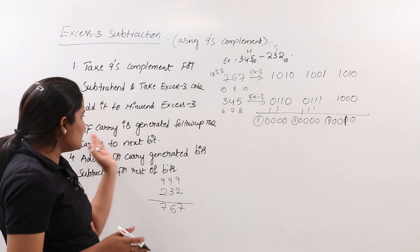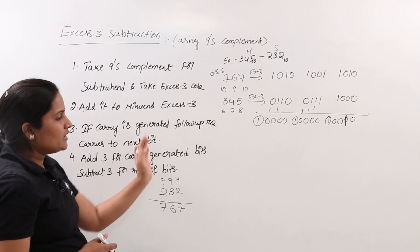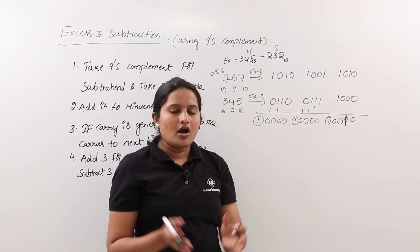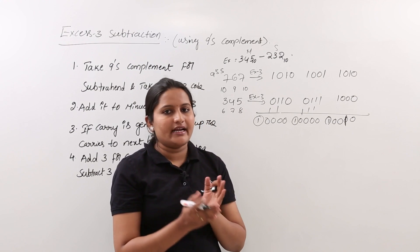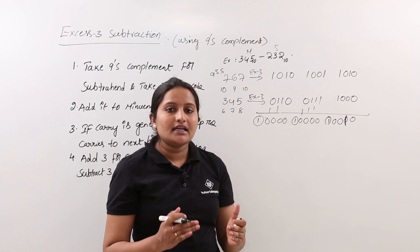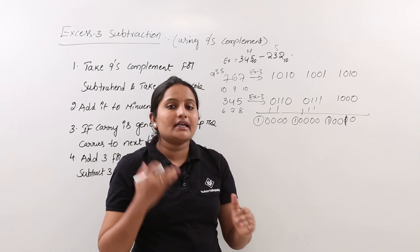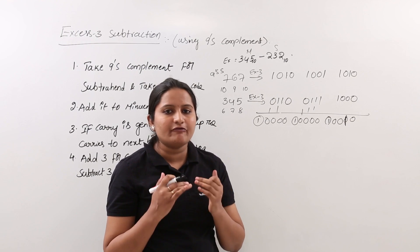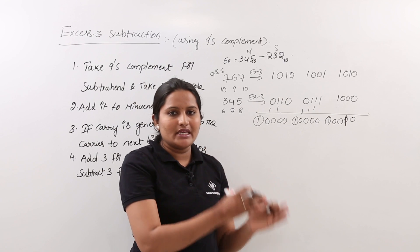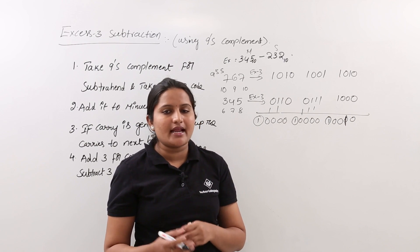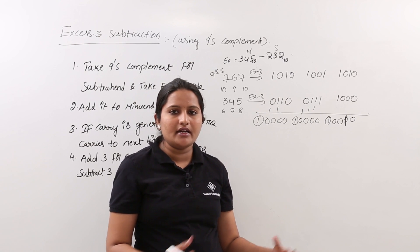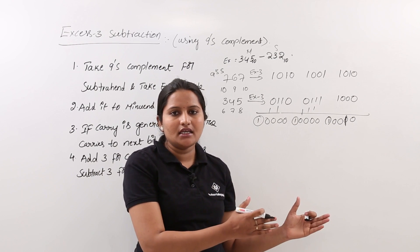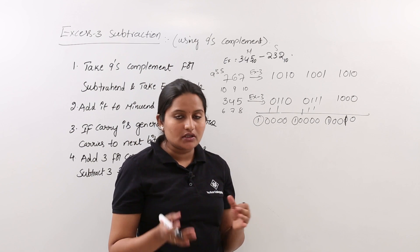An important difference: in BCD subtraction, carries are followed up in the last step. But in XS3 subtraction, carries must be followed up in the first step itself. Also, in BCD you apply correction first, then carry follow-up; whereas in XS3 you do carry follow-up first. This is the main difference between BCD and XS3 subtraction processes.